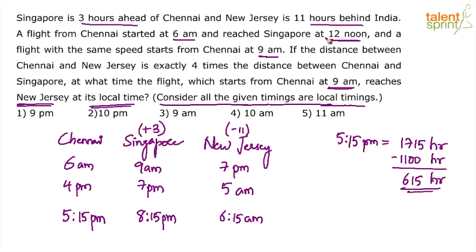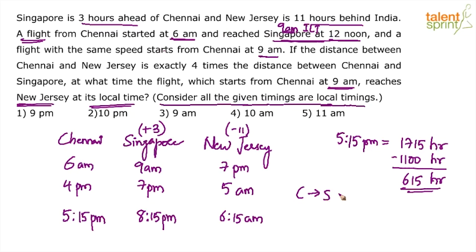This 12 noon is Singapore's local time. If it is 12 noon in Singapore, what time is it in Chennai? From Singapore to Chennai, you subtract — so 12 noon minus 3 hours is 9 am Indian time. So the flight which took off at 6 am reached Singapore at 9 am Indian time, meaning it is a 3-hour flight. Chennai to Singapore takes 3 hours.